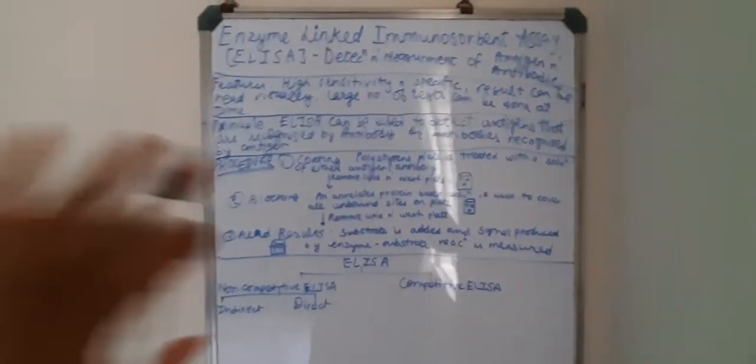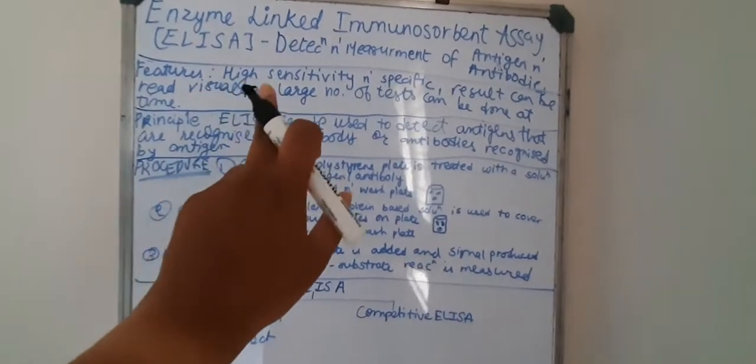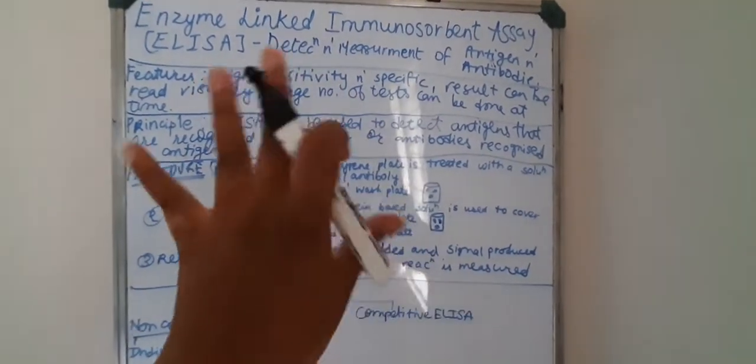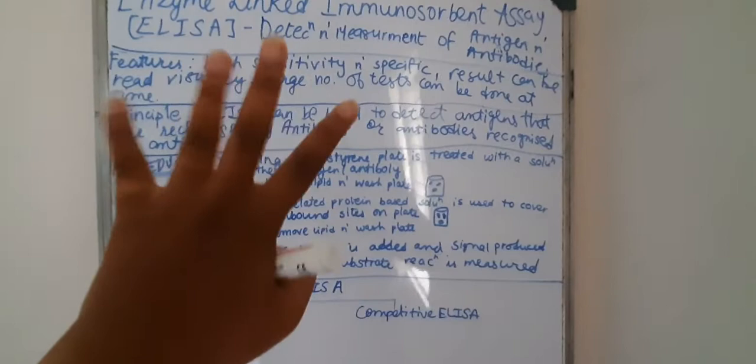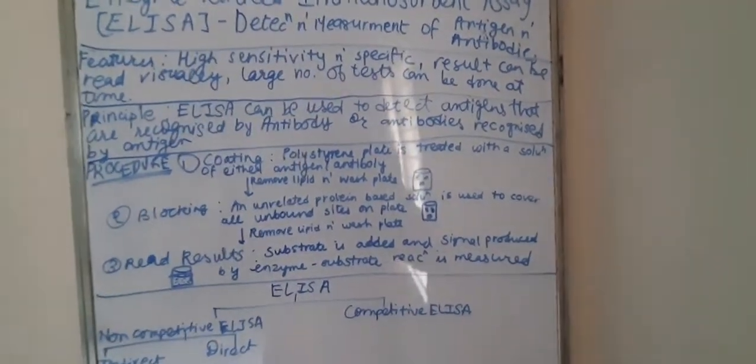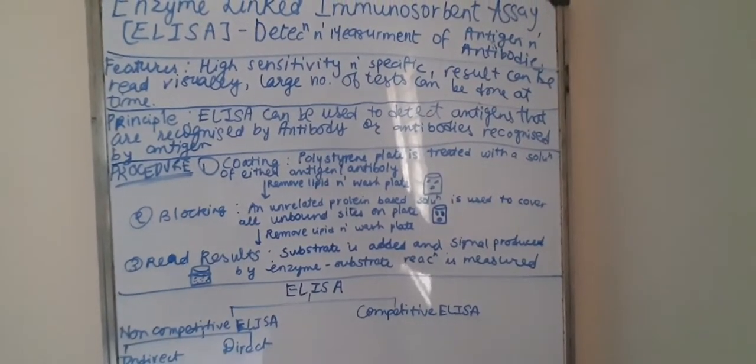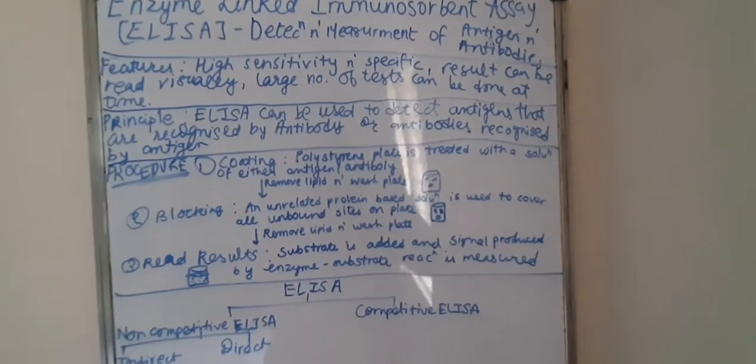Features of ELISA include high sensitivity and high specificity. Results can be read visually, and a large number of tests can be done at the same time.